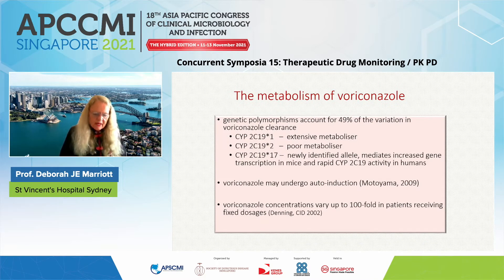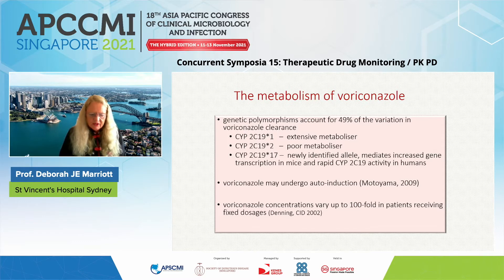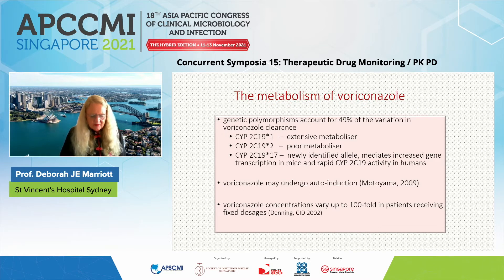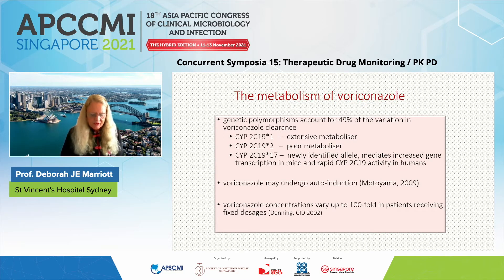About half of the variation in voriconazole is due to genetic polymorphisms: extensive metabolisers, poor metabolisers, and the more recently identified star-17, which is a very rapid metaboliser. Voriconazole may also undergo auto-induction over time. David Denning recognised back in 2002 that concentrations can vary up to 100-fold in patients receiving fixed dosages. So this is a drug that is ripe for TDM.